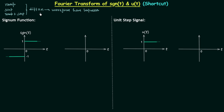The number of times we need to differentiate depends on the type of signal. If we have a signal that is a combination of ramps, we differentiate it once to get a combination of steps, then once more to get only impulses — so two differentiations total. For a signal with only steps, we differentiate only one time.